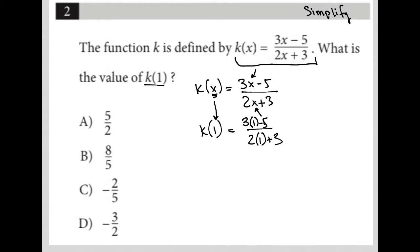So just simplifying this by replacement, replacing x with 1. So I'm left with 3 times 1, which is 3, minus 5, which is negative 2, and 2 times 1, which is 2, plus 3, which is 5, and therefore the answer is negative 2 fifths, which is choice C.